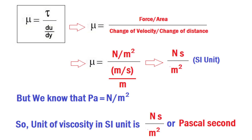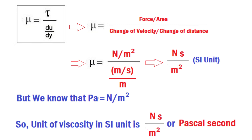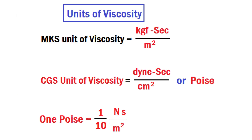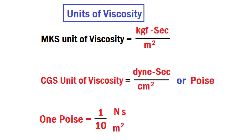Since pascal equals newton per meter square, the viscosity unit can also be written as pascal·second. In MKS unit, the unit of viscosity is kgf·second per meter square. In CGS unit, the unit of viscosity is dyne·second per centimeter square, also called poise.